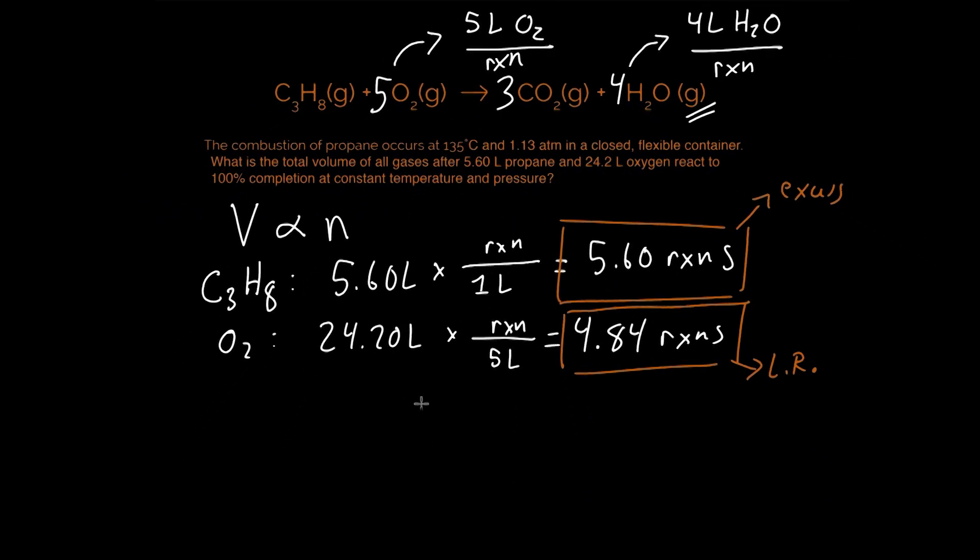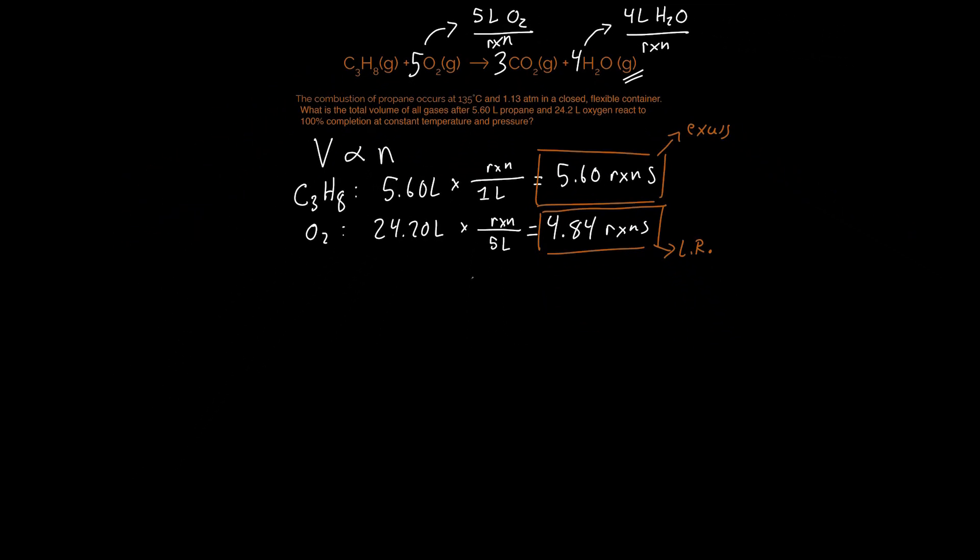And so we're going to move on to step 3, which is to solve for the amount of products that we can create with this 4.84 reactions. Let's start with carbon dioxide. And if we have 4.84 reactions that are possible, and each reaction gets us 3 liters of carbon dioxide per reaction, that's going to be equal to 14.52 liters.